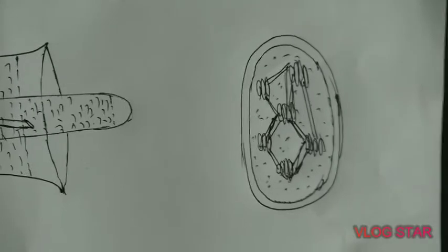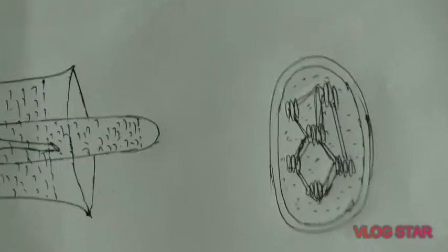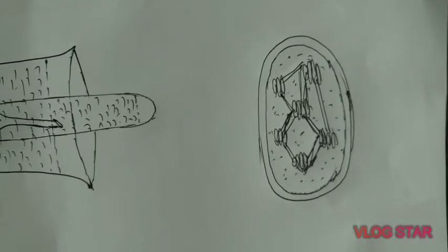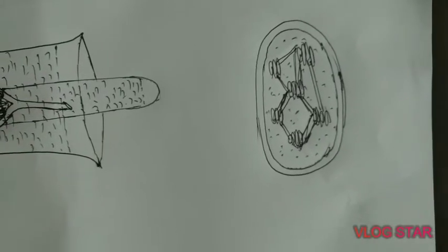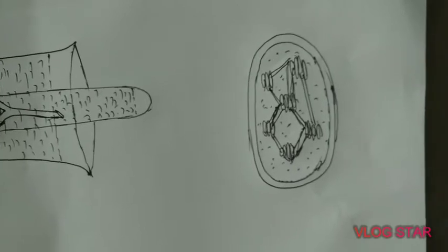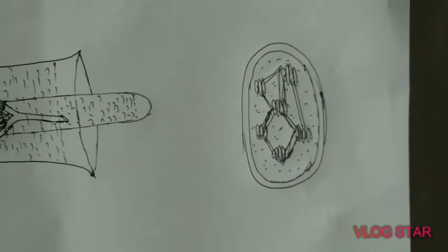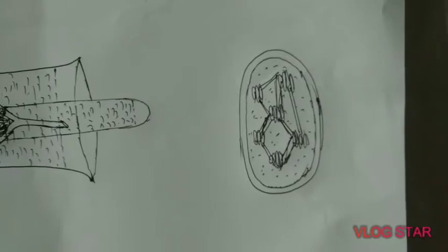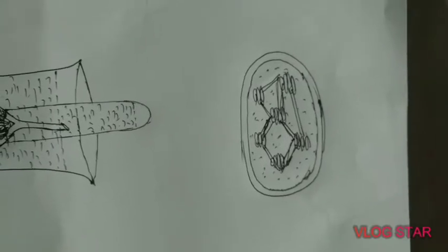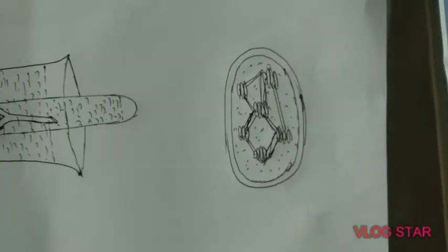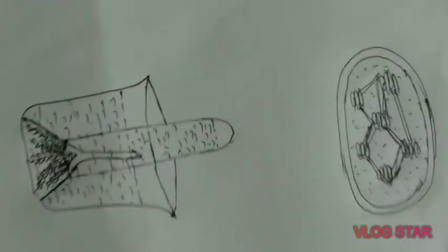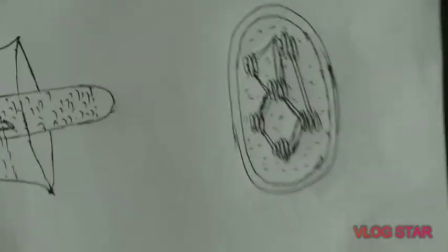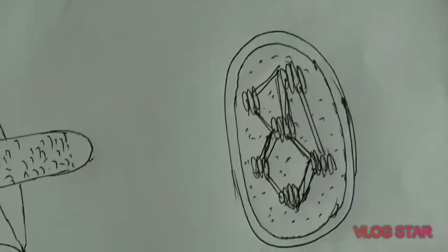The second step is the dark phase, which is done within the stroma. Here light is not used. The hydrogen formed during the light phase combines with carbon dioxide to form carbohydrate by using the ATP formed during the first phase. As a result, glucose is formed. This is stored within the leaves and other plant body parts for further use.